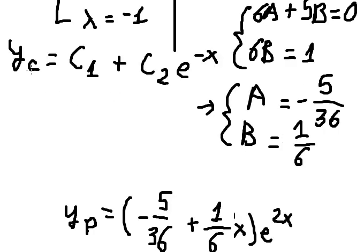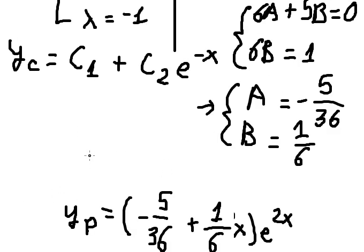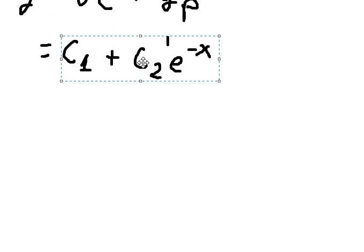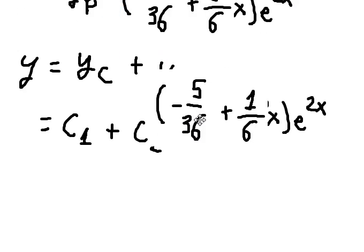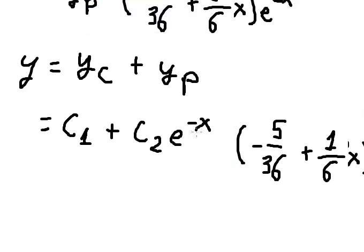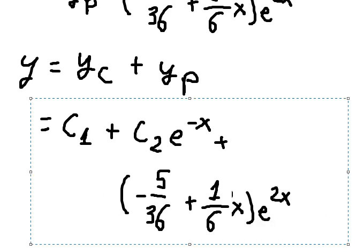Now we combine yc and yp. We substitute the values of a and b into yp. The final answer is y equals c1 plus c2 times e to the power of negative s, plus (negative five over 36 plus one sixth times s) times e to the power of 2s. This is the final answer. Thank you for watching, see you next time.